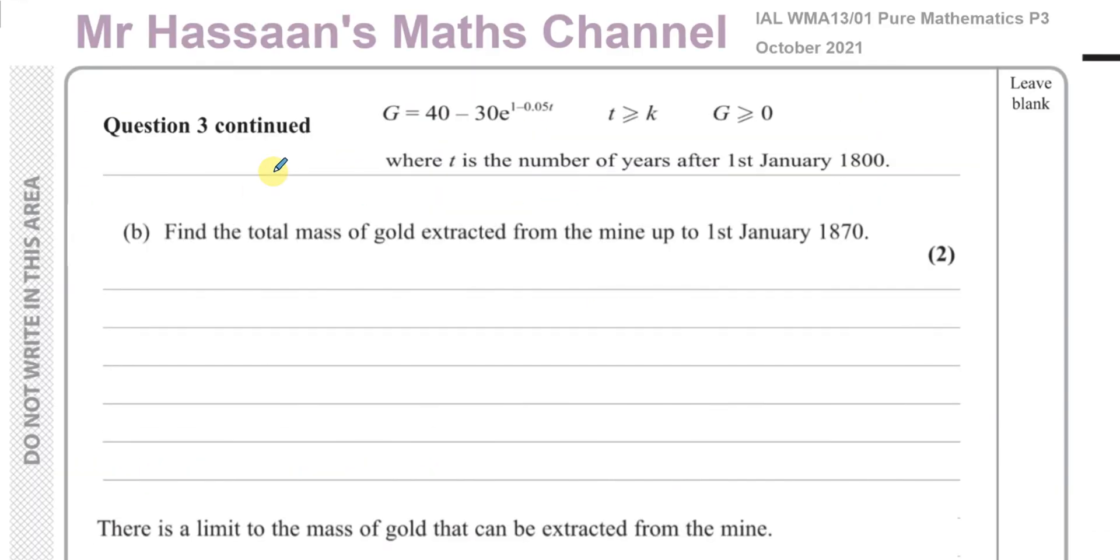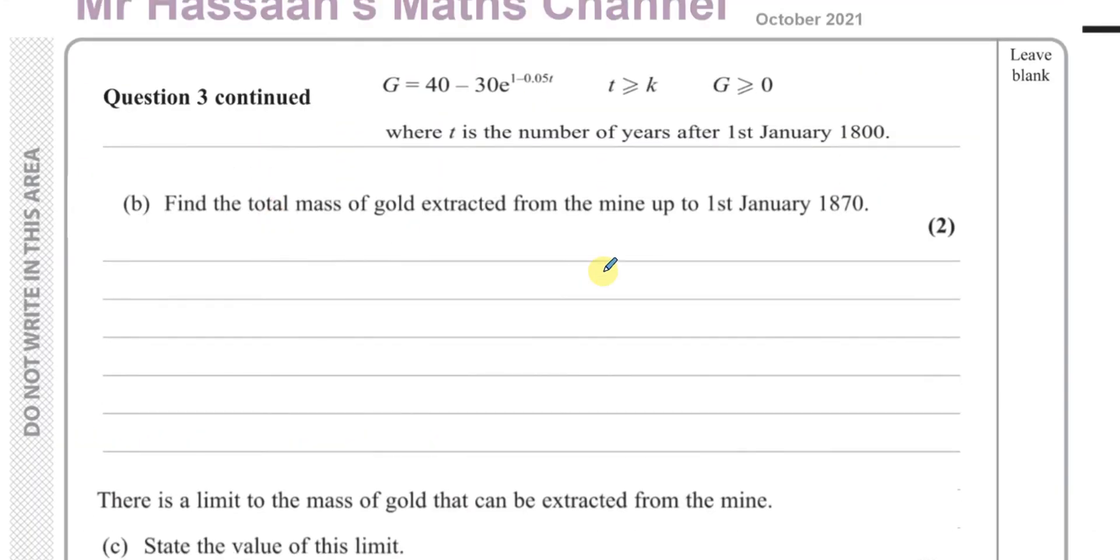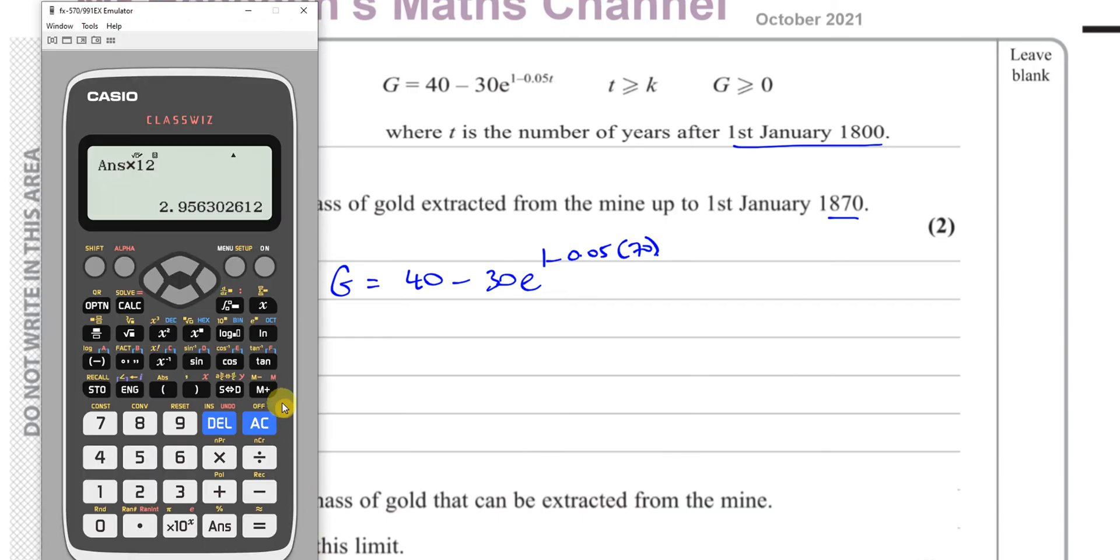Now for part B, it says find the total mass of gold extracted from the mine up to the 1st of January 1870. So remember, G is the mass extracted from 1800 onwards. So t basically is the number of years after 1800, after the 1st of January 1800. So we can say t is going to be 70 years. So we're going to find G when t is 70. So that's pretty straightforward. G equals 40 minus 30e to the power of 1 minus 0.05 times 70.